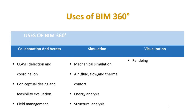Here are the uses of BIM 360. We have collaboration and access, simulation, and visualization. Under collaboration and access we have clash detection and coordination, conceptual design and feasibility evaluation, and field management. For simulation we have mechanical simulation, air comfort, fluid flow, and thermal comfort. We also have energy analysis and structural analysis. For visualization we have rendering.